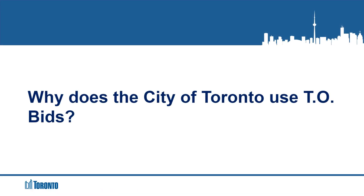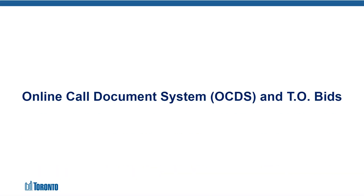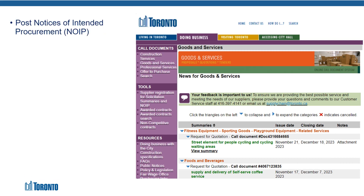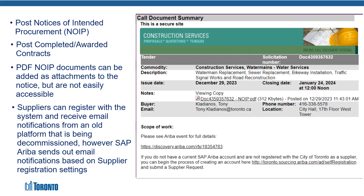Why does the City of Toronto use TO Bids? As previously mentioned, TO Bids replaces the previous online call document system, or OCDS, and retains many of the OCDS's functionalities. The OCDS initially used to post notices of intended procurement, as well as completed, awarded, and cancelled contract information. Suppliers and members of the public could register on the OCDS and list the commodities that they were interested in receiving email notifications for. Suppliers could also purchase solicitation documents, and OCDS postings included an attached PDF NOIP document for additional information.